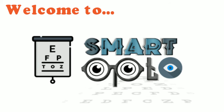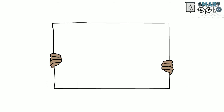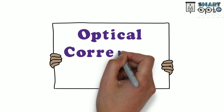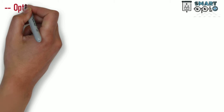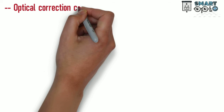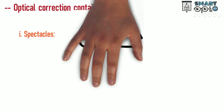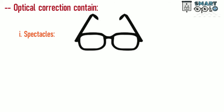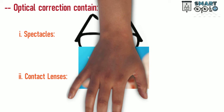Welcome to Smart Optometry. Today, I will discuss optical correction in myopia. Optical correction contains two main options: 1. Spectacles, and 2. Contact lenses.